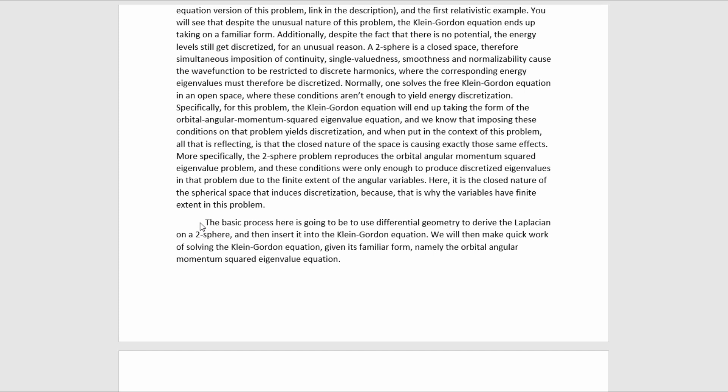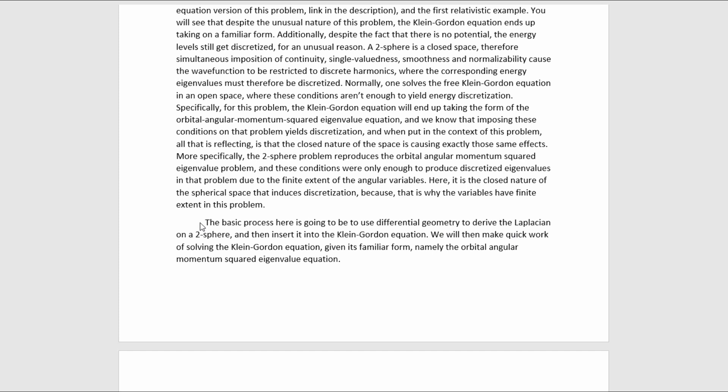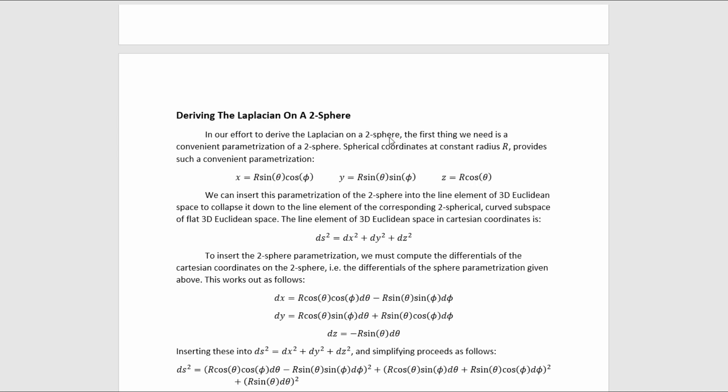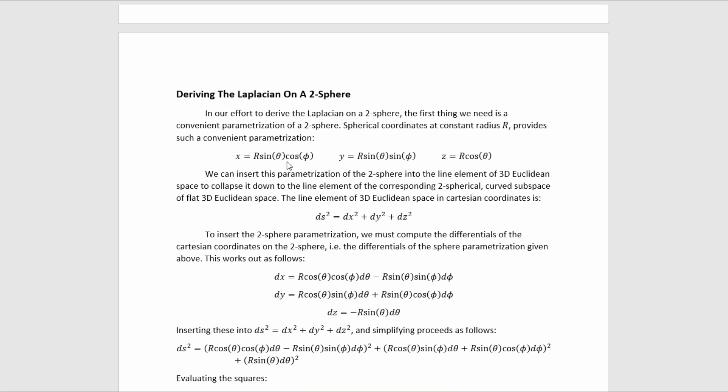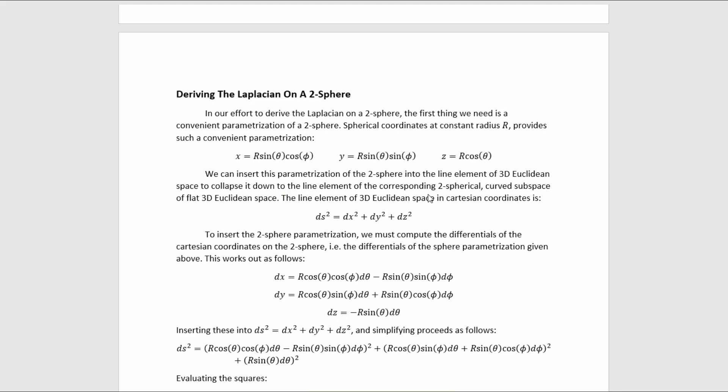The basic process here is going to be to use differential geometry to derive the Laplacian on a 2-sphere, and then insert it into the Klein-Gordon equation. We will then make quick work of solving the Klein-Gordon equation, given its familiar form. In our effort to derive the Laplacian on a 2-sphere, the first thing we need is a convenient parameterization of a 2-sphere. Spherical coordinates at constant radius provides us with such a parameterization. If we let the radius vary, then they would parameterize the entirety of three-dimensional Euclidean space, but because we fix the radius to be a constant, it ends up just parameterizing a spherical subspace. We can insert this parameterization of the 2-sphere into the line element of 3-D Euclidean space to collapse it down to the line element of the corresponding 2-spherical curved subspace of flat 3-D Euclidean space.